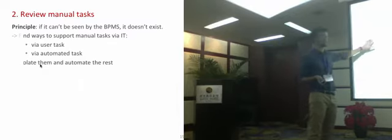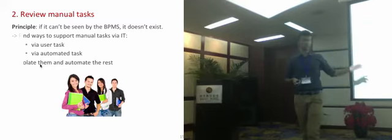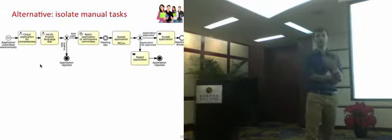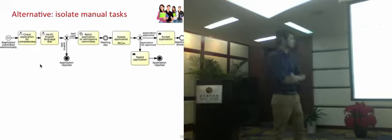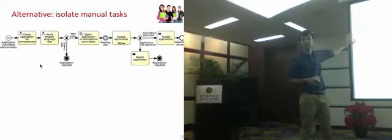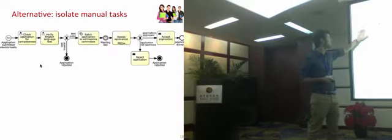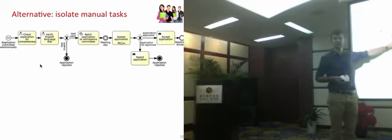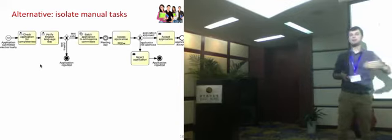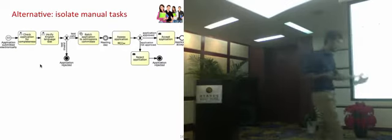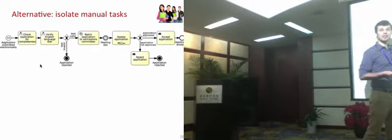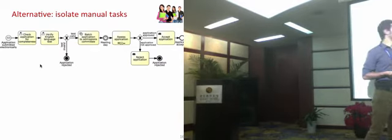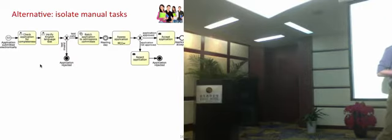Another option is to isolate a complex manual task and automate the rest. Consider a student admission process where an application submitted electronically goes through compliance checking and English language test verification. If the test is invalid, the application is rejected. If valid, applications are batched and at the meeting day, the assessment committee meets to assess them. There is an ad-hoc multi-instance task containing four manual tasks that can occur in almost any order.